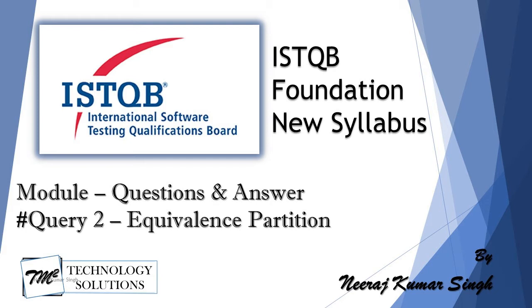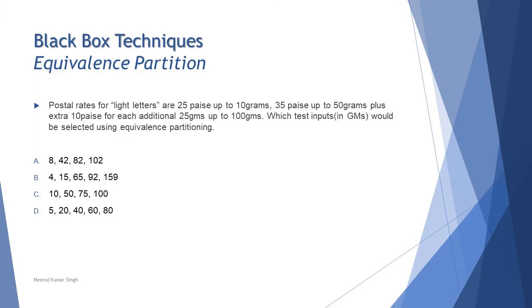Today's question is taken from equivalence partition, which has a very common type of question: to create the equivalence partition and find out the selected values. The question on the screen says postal rates for light letters are 25 paise up to 10 grams, 35 paise up to 50 grams, plus additional 10 paise for each additional 25 grams up to 100 grams.